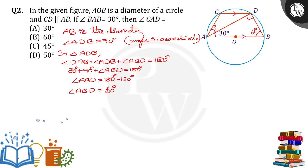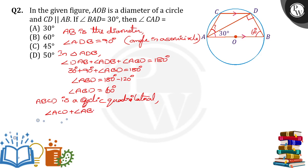Moving back to the figure — ABCD is a cyclic quadrilateral. In a cyclic quadrilateral, the sum of opposite angles is equal to 180 degrees. So angle ACD plus angle ABD is equal to 180. Angle ABD is 60 degrees, therefore angle ACD is equal to 120 degrees.